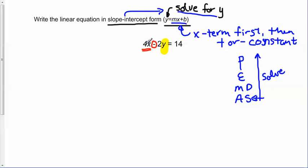Because this is a positive 4x, we need to subtract 4x in order for that to cancel out. If I subtract 4x on the left side, I certainly need to do the same thing on the right side as well. So 4x minus 4x, those will cancel out.